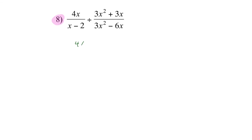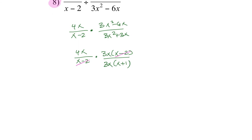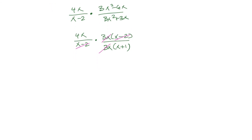On this last one, I have 4x over x minus 2. I change to multiplication and flip. So I get 4x over x minus 2, times 3x times x minus 2, divided by 3x times x plus 1. I cancel x minus 2 and 3x, and this equals 4x over x plus 1. And that's it for this lesson — may the fourth be with you!